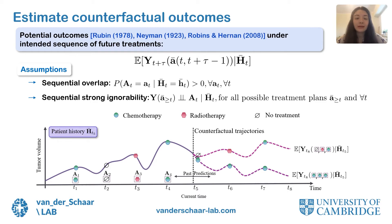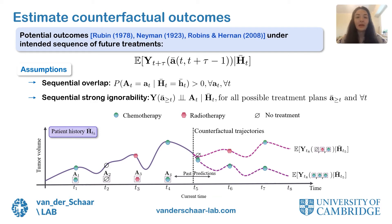To identify these potential outcomes from the observational data, we make the sequential overlap assumption and the sequential strong ignorability assumption. Sequential overlap means that at each time step, each treatment has a non-zero probability. Sequential strong ignorability means that there are no hidden confounders — that is, at each time step we observe all patient covariates that can affect the treatment assignment and future potential outcomes. Note that this assumption is untestable in practice and domain knowledge is needed to assess its validity.